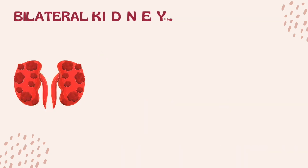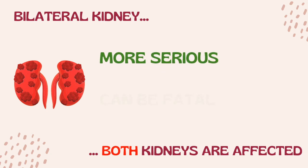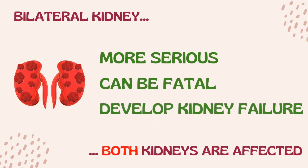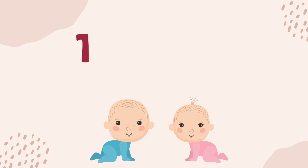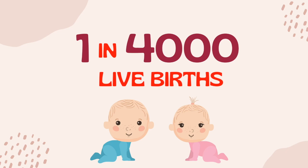Bilateral kidney dysplasia is when both kidneys are affected. Since both kidneys are dysplastic in this case, it is much more serious and if severe enough can be fatal to the developing fetus. In children, some may go on to develop kidney failure. When this happens, the person affected is usually a baby or a young child, but it is more likely to occur later in life, especially during puberty when the child's body is growing quickly.